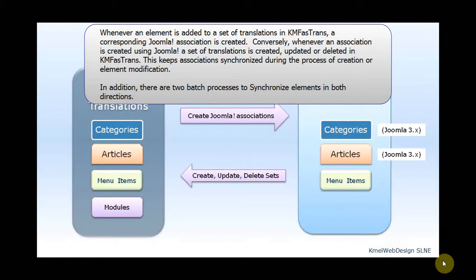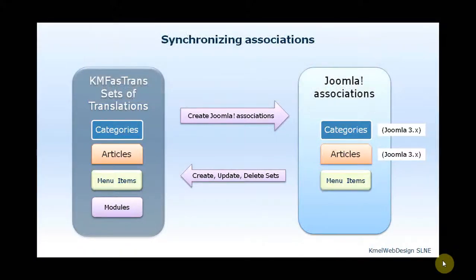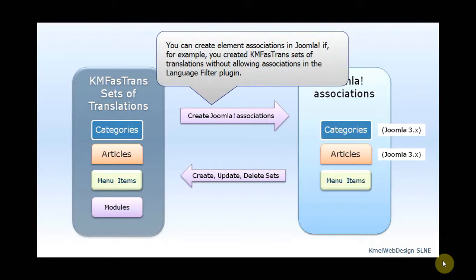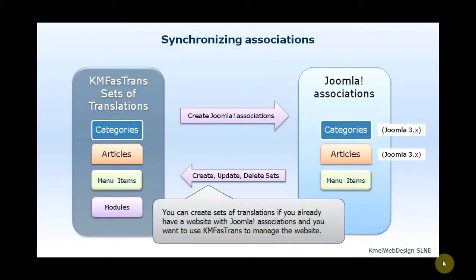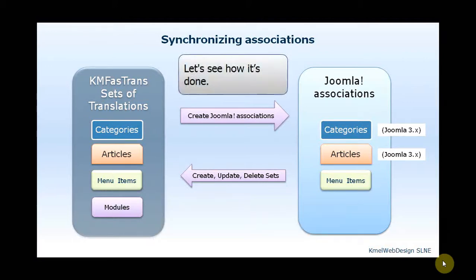In addition, there are two batch processes to synchronize elements in both directions. You can create element associations in Joomla if, for example, you created KM FastTrans sets of translations without allowing associations in the Language Filter plugin. You can also create sets of translations if you already have a website with Joomla associations and you want to use KM FastTrans to manage the website.